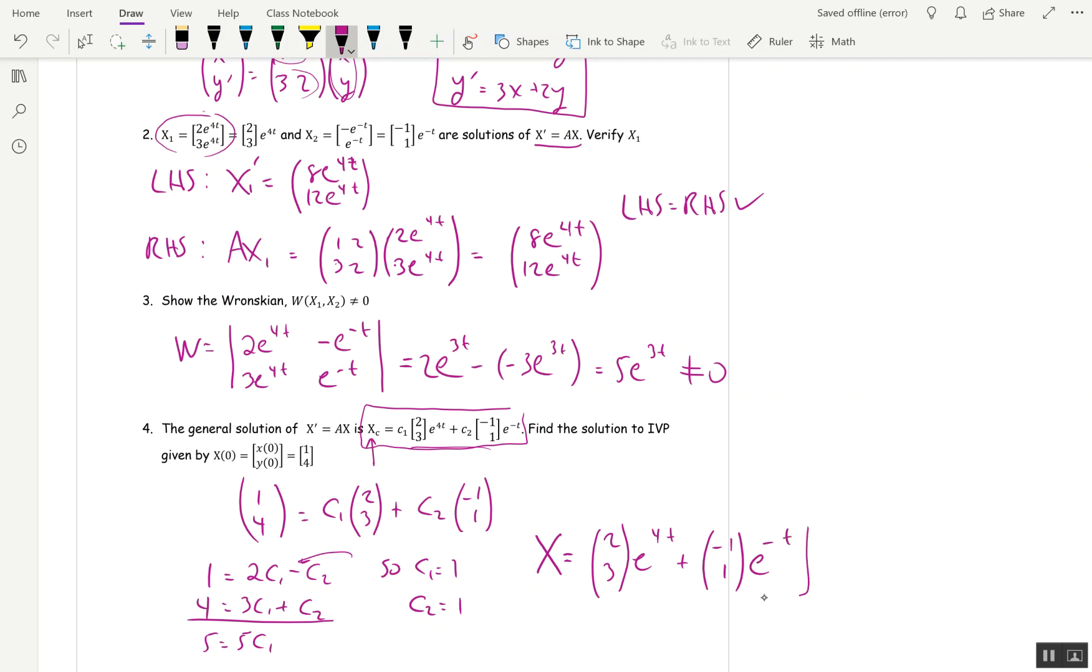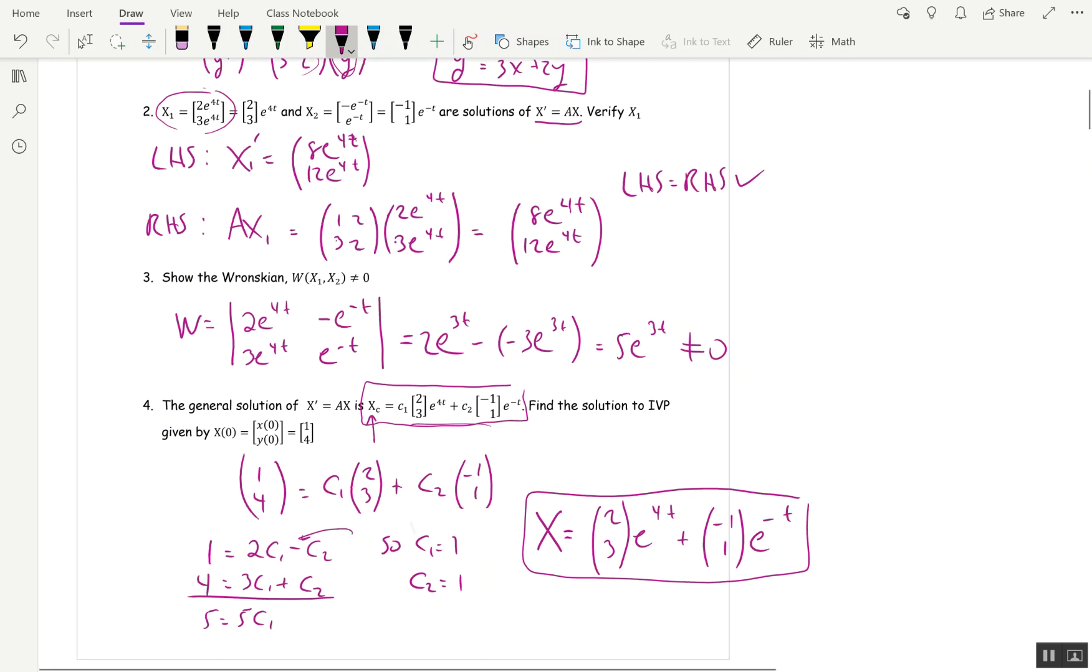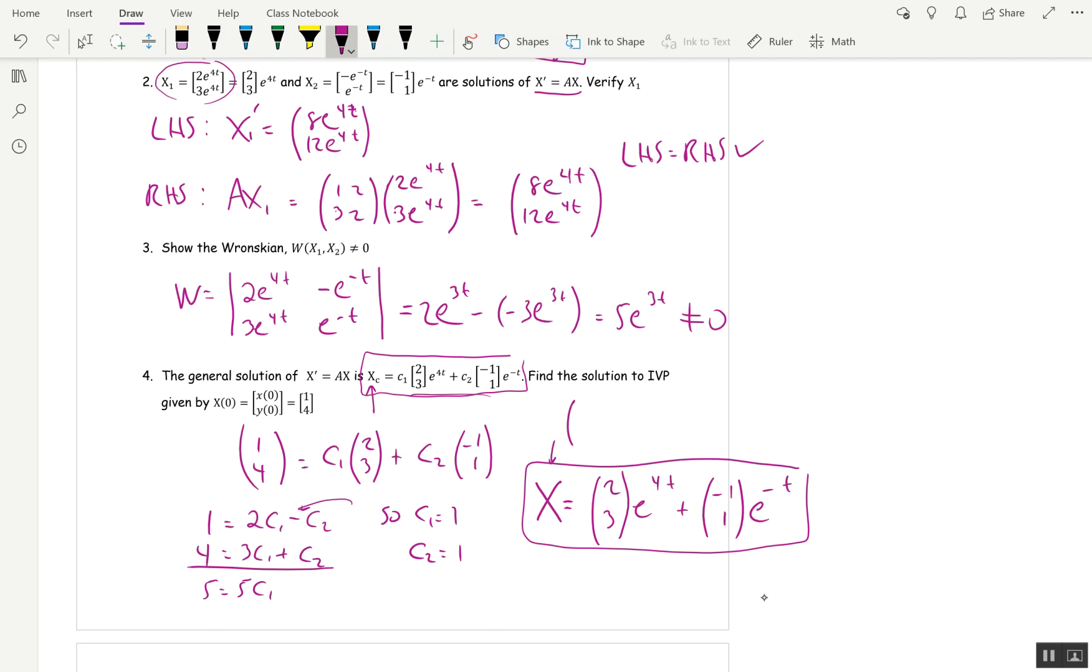That's a vector equation, and that's fine, but you can also write that as a system of two equations. Remember that X = (x, y). So if you want to write that as a system of two equations, it would be x = 2e^(4t) - e^(-t), and y = 3e^(4t) + e^(-t). So this is a vector equation, and